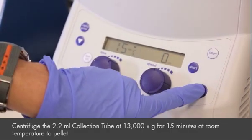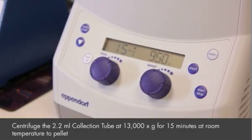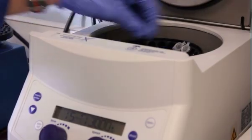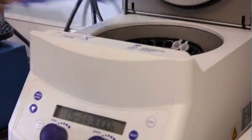Centrifuge the 2 ml collection tube at 13,000 times G for 15 minutes at room temperature to pellet. Position the tubes to have a reference point for the location of the pellet that may not be visible.